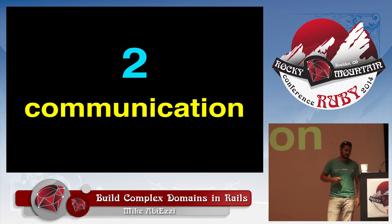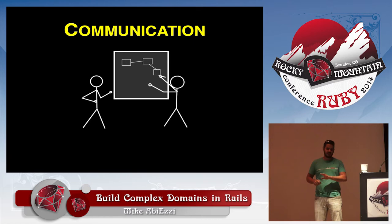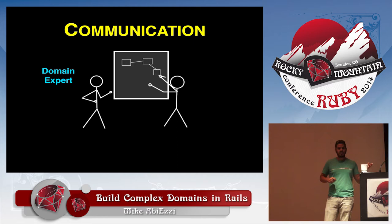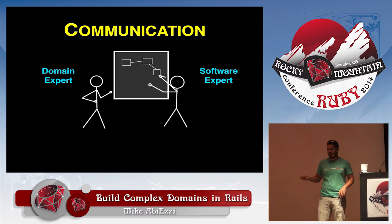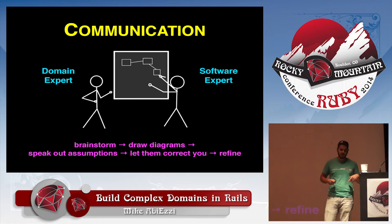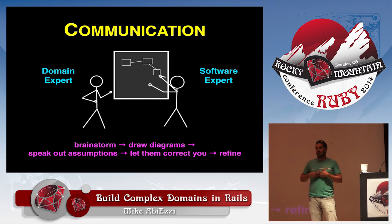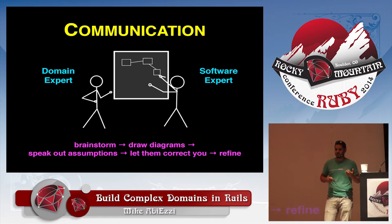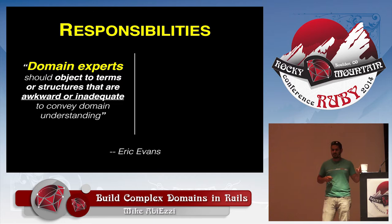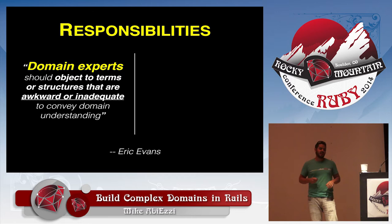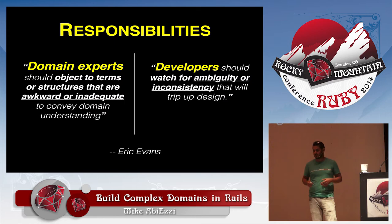To talk about the finer points of communication we just demonstrated: there are two sides. You have your domain expert who knows how your domain works, and the software expert who knows how to build software for a domain. You go through iterations of brainstorming, drawing diagrams, and speaking out assumptions. It's very important to use natural language. Let him brain dump on you, fill in the gaps with language, and then let him correct you when you're wrong. The developer is looking for situations where two terms are being used to describe the same concept, because when you build software you can't use two words for one concept.